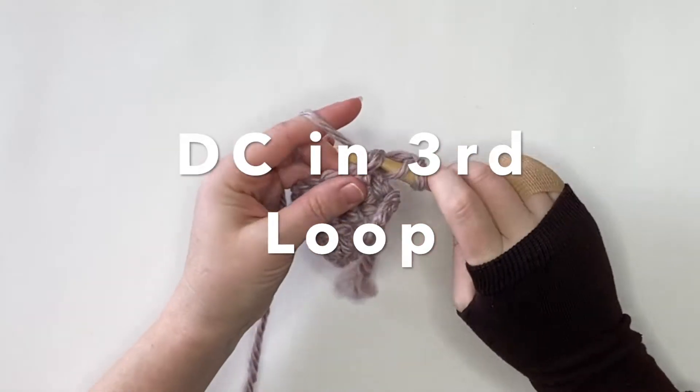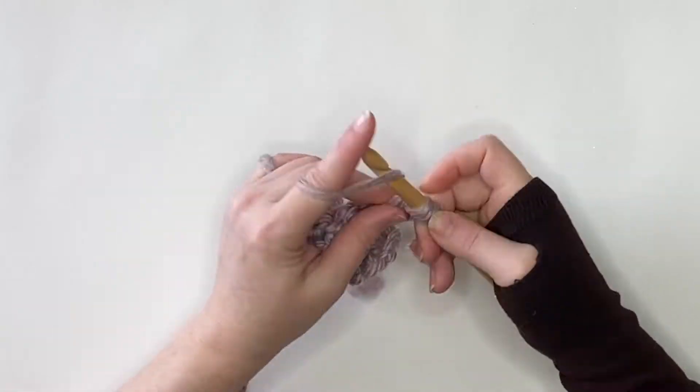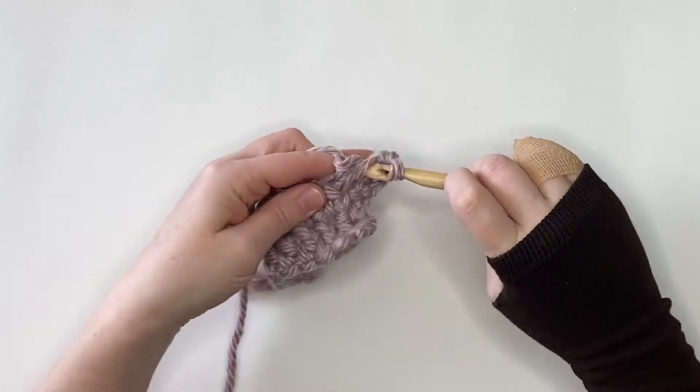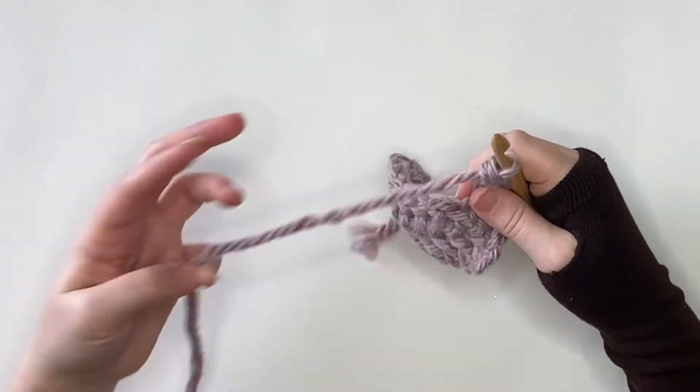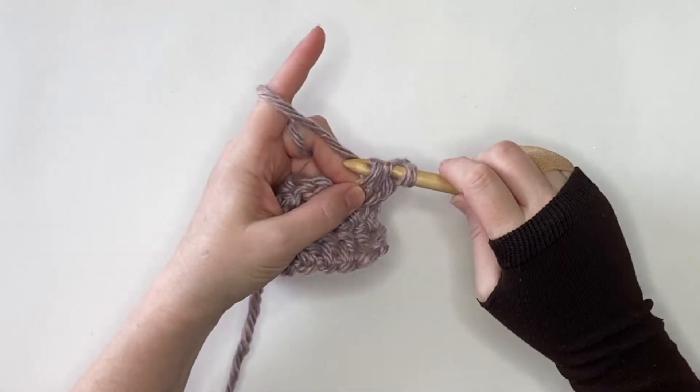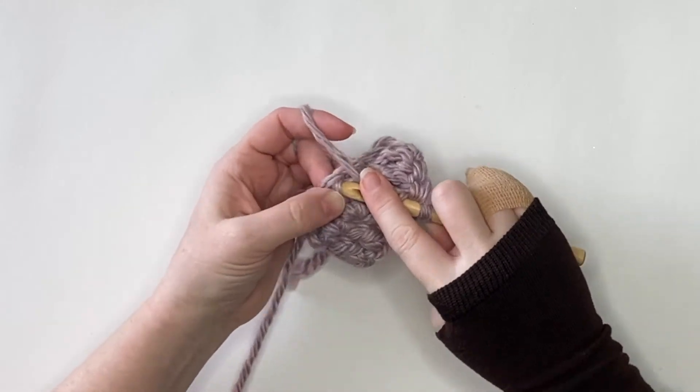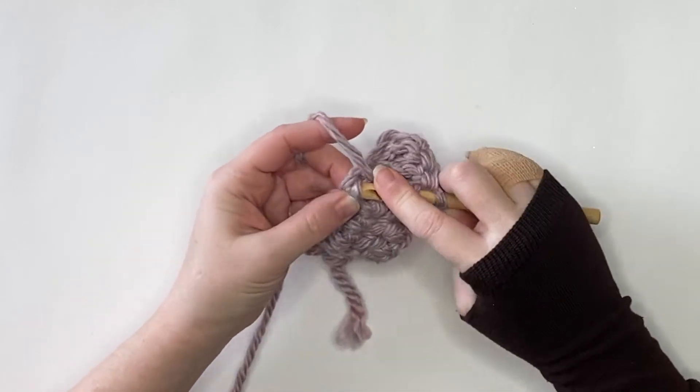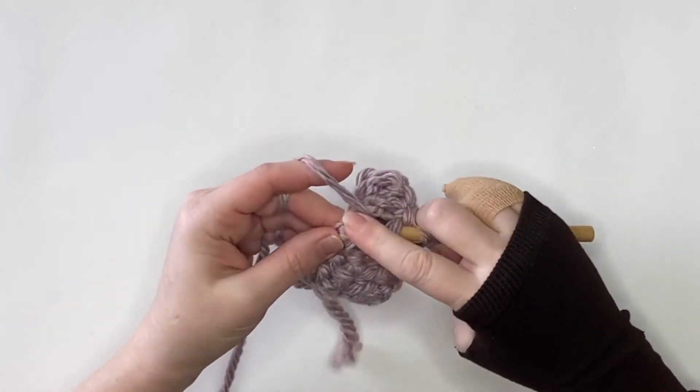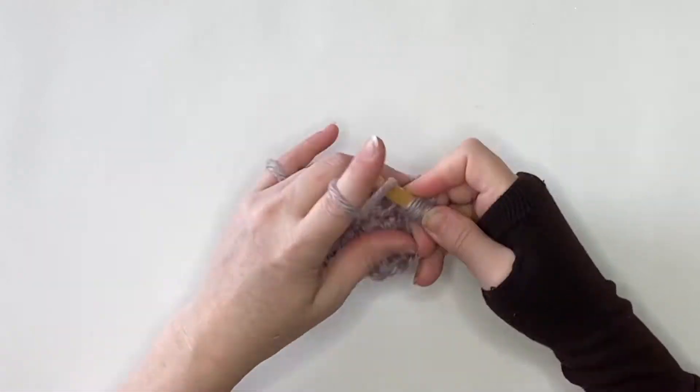Now here's where we get to the fun part where it's a little bit different, and it's not just a whole bunch of double crochets. It's a double crochet through the third loop of your next stitch. So basically, it's like doing a front loop only double crochet. You're going to yarn over and go in that front loop, but it's not—it's the third loop, it's not the front loop necessarily.